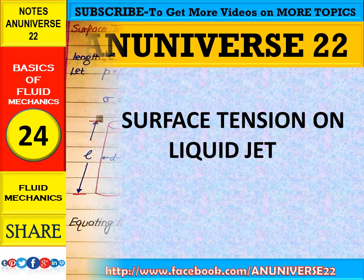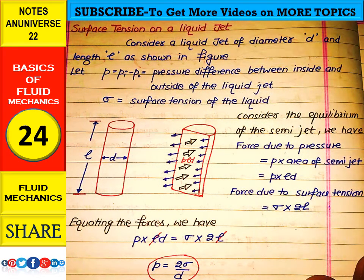Let's start with surface tension on liquid jet. Consider a liquid jet of diameter D and length l as shown in the figure. Let p be the pressure difference between inside and outside of the liquid jet.